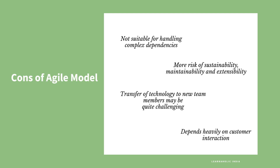Disadvantages of the Agile model: it is not suitable for handling complex dependencies. There is more risk of sustainability, maintainability, and extensibility. Transfer of technology to new teams may be challenging due to lack of documentation. An overall plan, an Agile leader, and Agile PM practices are a must. This model depends heavily on customer interaction, so if the customer is not clear about requirements, the team can be driven in the wrong direction.